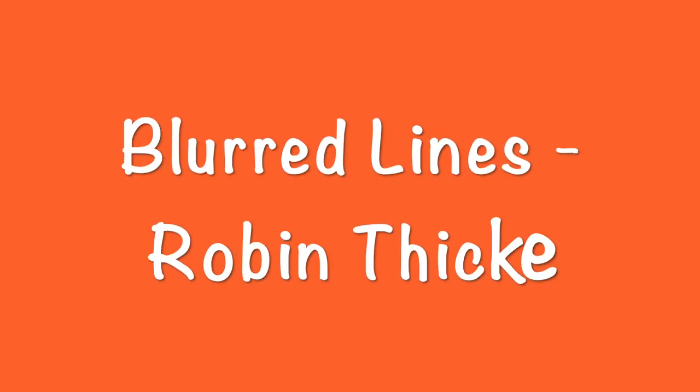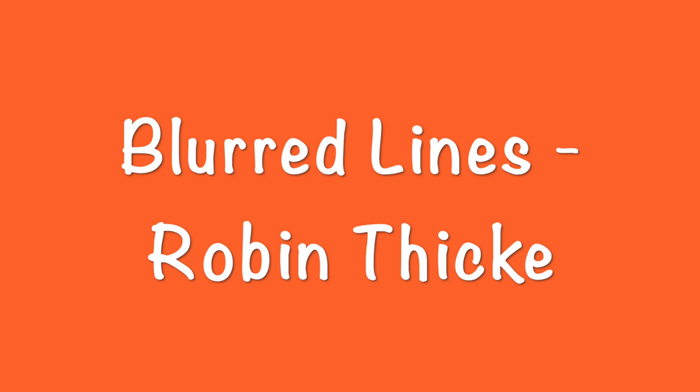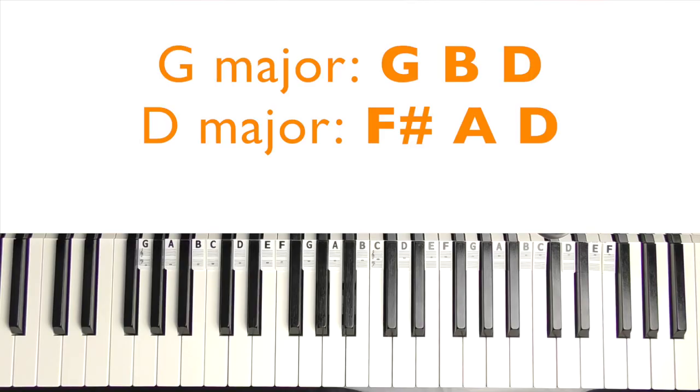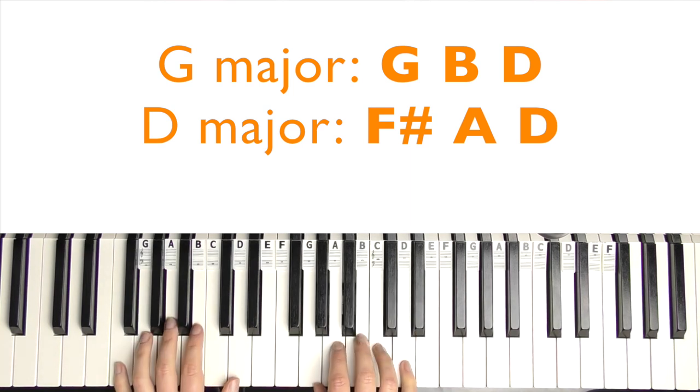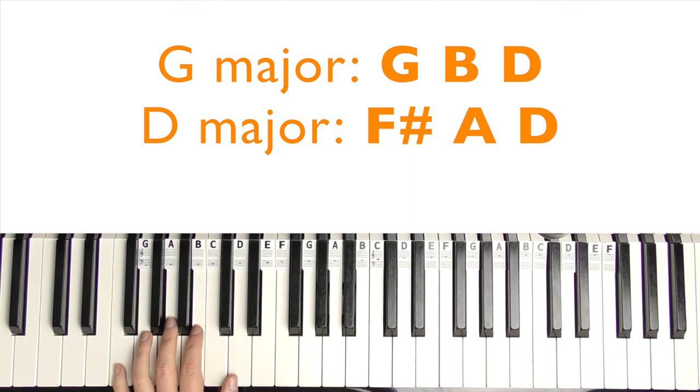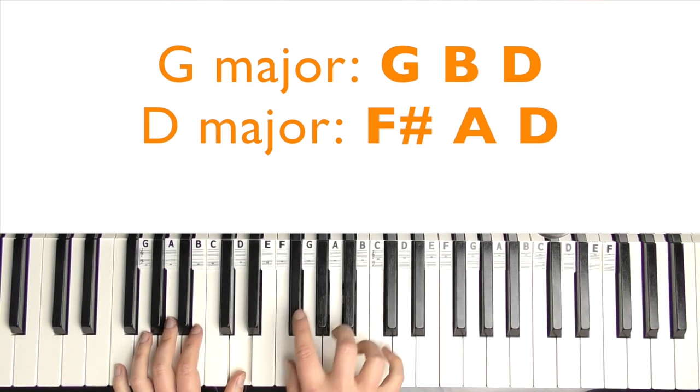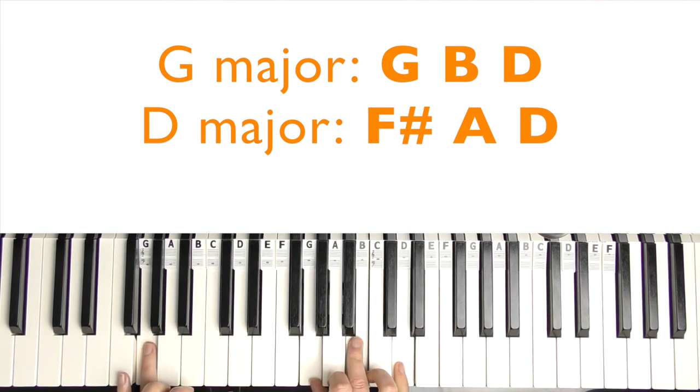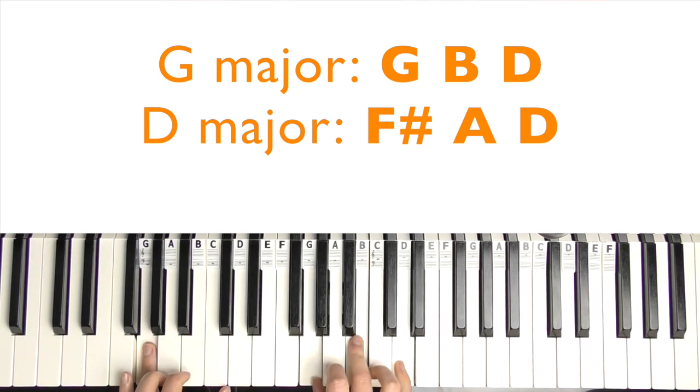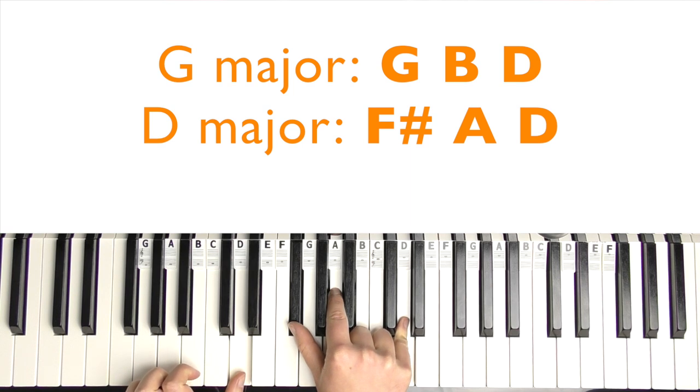So this next one is Blurred Lines by Robin Thicke. So this one uses two chords G major that we just had so G B and D and the quickest way to get to the next chord which is we're going to play first inversion so it's F sharp A and D. So we have G major.